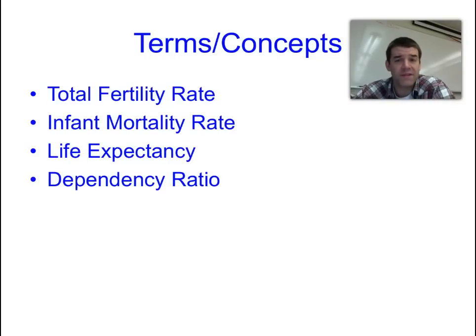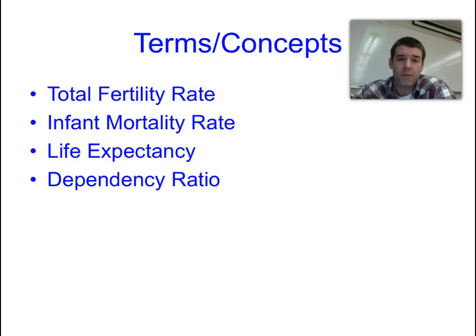With that in mind from the last video, the terms and concepts you should take away for this one are: total fertility rate, infant mortality rate, life expectancy, and dependency ratio. Dependency ratio is something we talked about briefly in class when we looked at population pyramids — you'll recognize the concept when we get there.